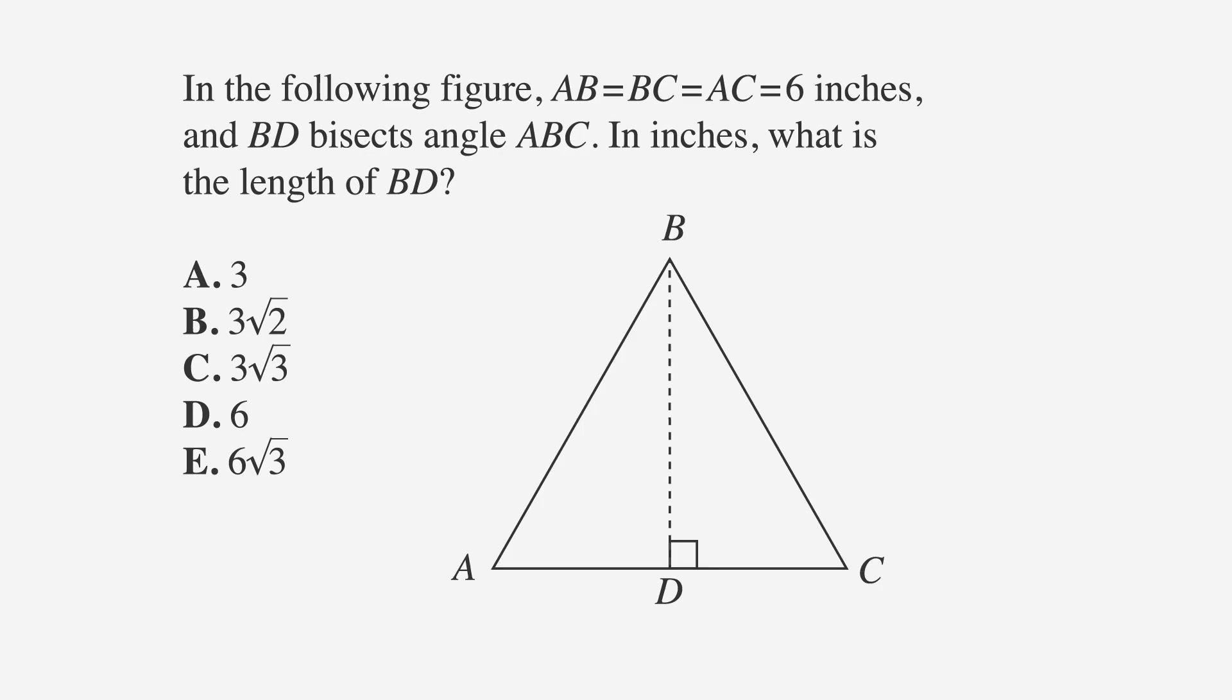In the following figure, AB equals BC equals AC equals 6 inches, and BD bisects angle ABC. In inches, what is the length of BD? Our answer choices are A: 3, B: 3 times the square root of 2, C: 3 times the square root of 3, D: 6, and E: 6 times the square root of 3.